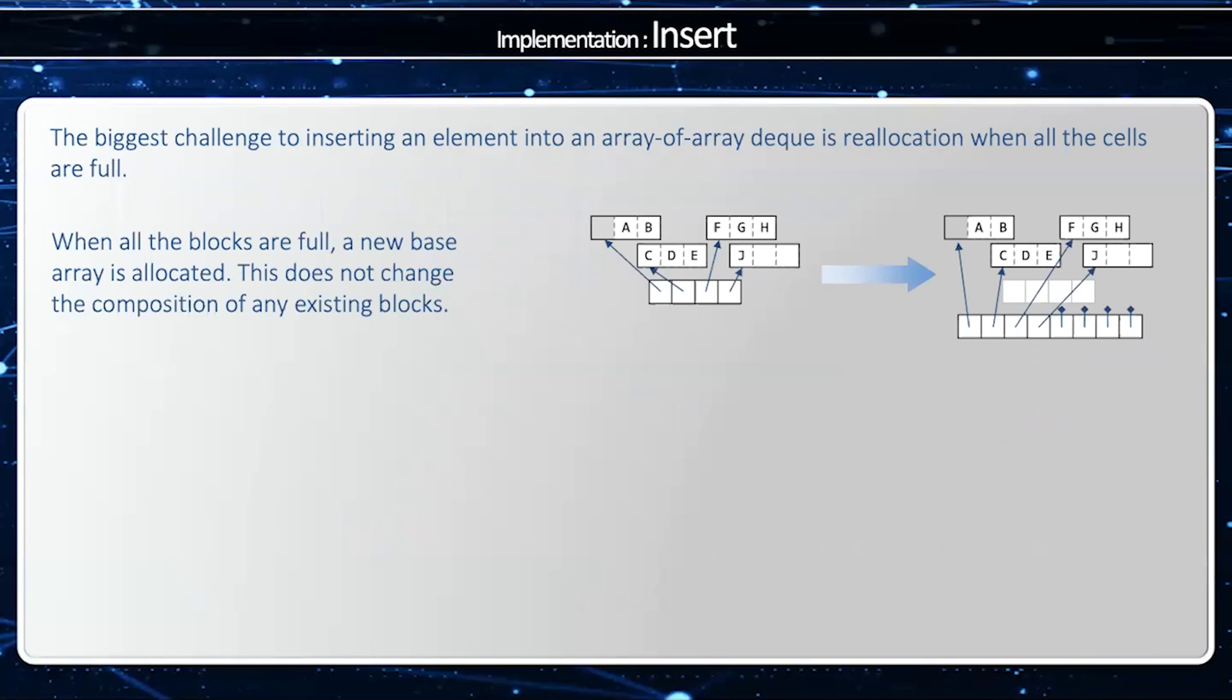So in this example, I have four blocks and I need to make room for more. So I'm going to double the size. And so the new pointer array is going to still point to the same blocks, which have not moved, but now I'm going to have four additional null pointers. And this allows me to grow the deque capacity without actually moving any blocks or moving any elements.